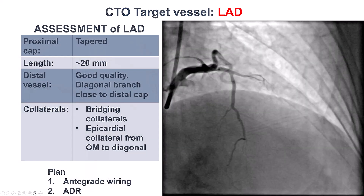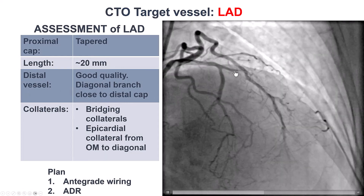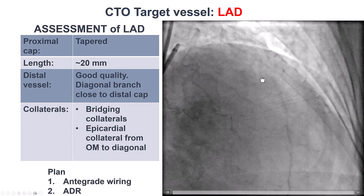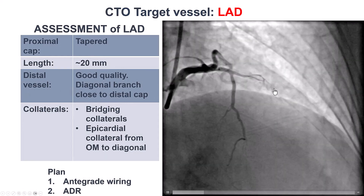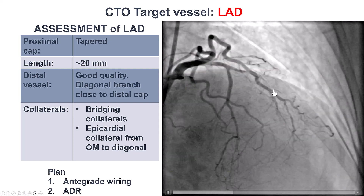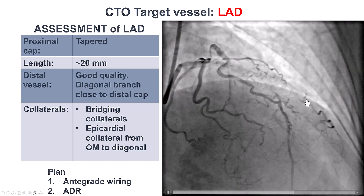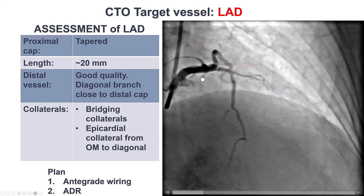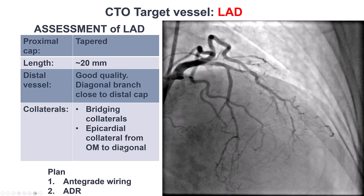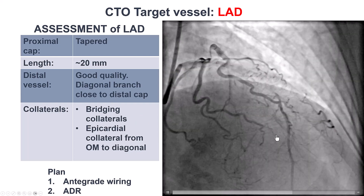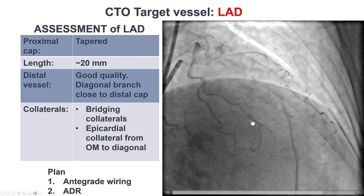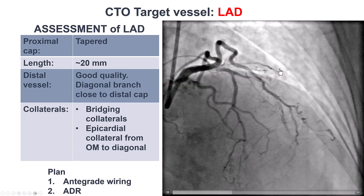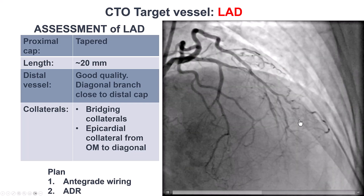To summarize: there is tapered entry with some ambiguity, and the length seems to be fairly short. The distal vessel is of good quality, but there is a diagonal branch filling close to the distal cap. The collaterals were epicardial.